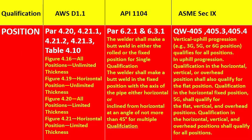The second important item is position. As per AWS D1.1, para 4.20, 4.21.1, 4.21.2, and 4.21.3, and importantly table 4.10: figure 4.16 covers all positions unlimited thickness; figure 4.19 horizontal position unlimited thickness; figure 4.20 all position limited thickness; figure 4.21 horizontal position limited thickness. Table 4.10 clearly shows which positions are qualified — for example, if you qualify for horizontal position, what other positions are covered.